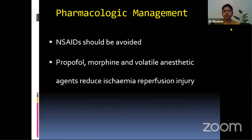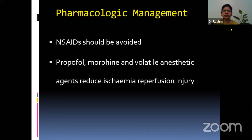Opioids should be used during anesthesia at the time of induction in titrated doses — fentanyl or morphine can be used. If you don't take care of pain, there is a neurohormonal response and intense vasoconstriction can happen because of pain, which can cause delayed graft function. Volatile anesthetics are good agents because they help control blood pressure and prevent any ischemia-reperfusion injury that might occur.